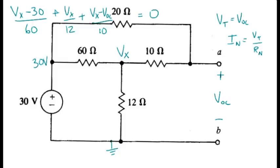For the second equation associated with Voc, we'll have Voc minus 30 divided by 20 ohm plus Voc minus Vx over 10. And that equals 0.